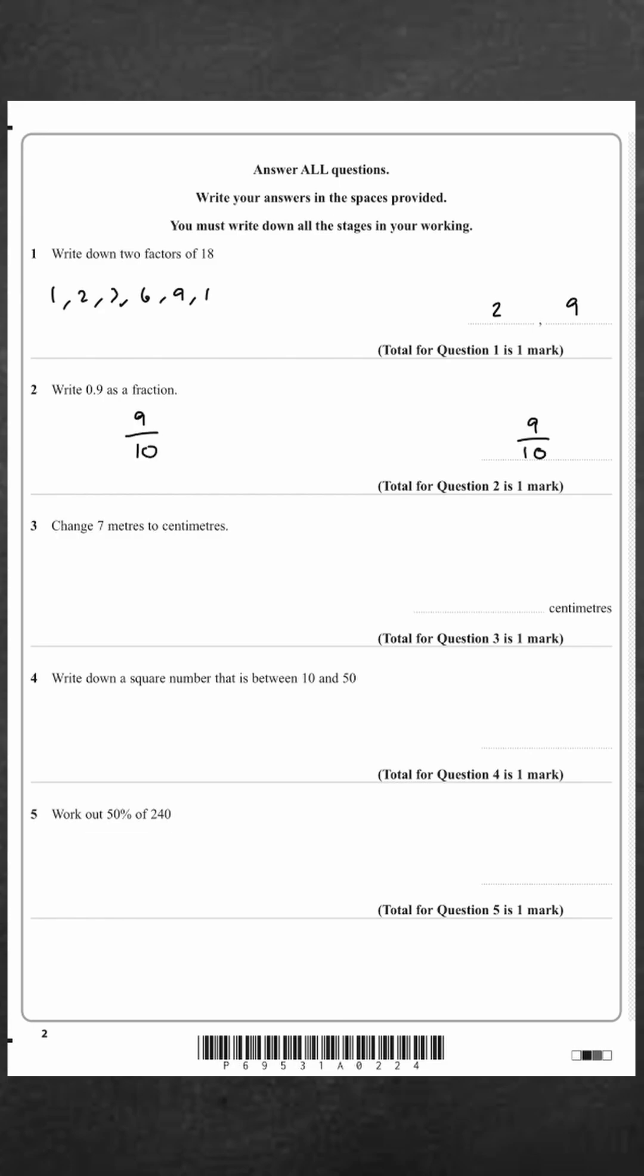And question three, change 7 metres to centimetres. 1 metre is 100 centimetres. So 7 metres will be 100 times 7, which is just 700 centimetres.